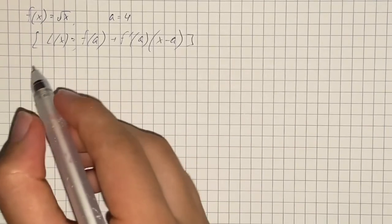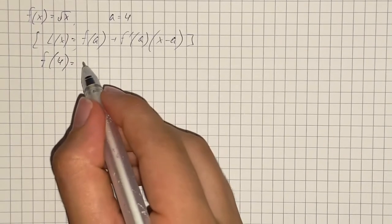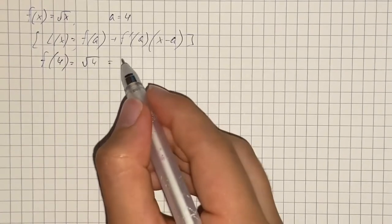So first we're going to find our function at point 4, so that's going to be square root of 4 and that equals 2.